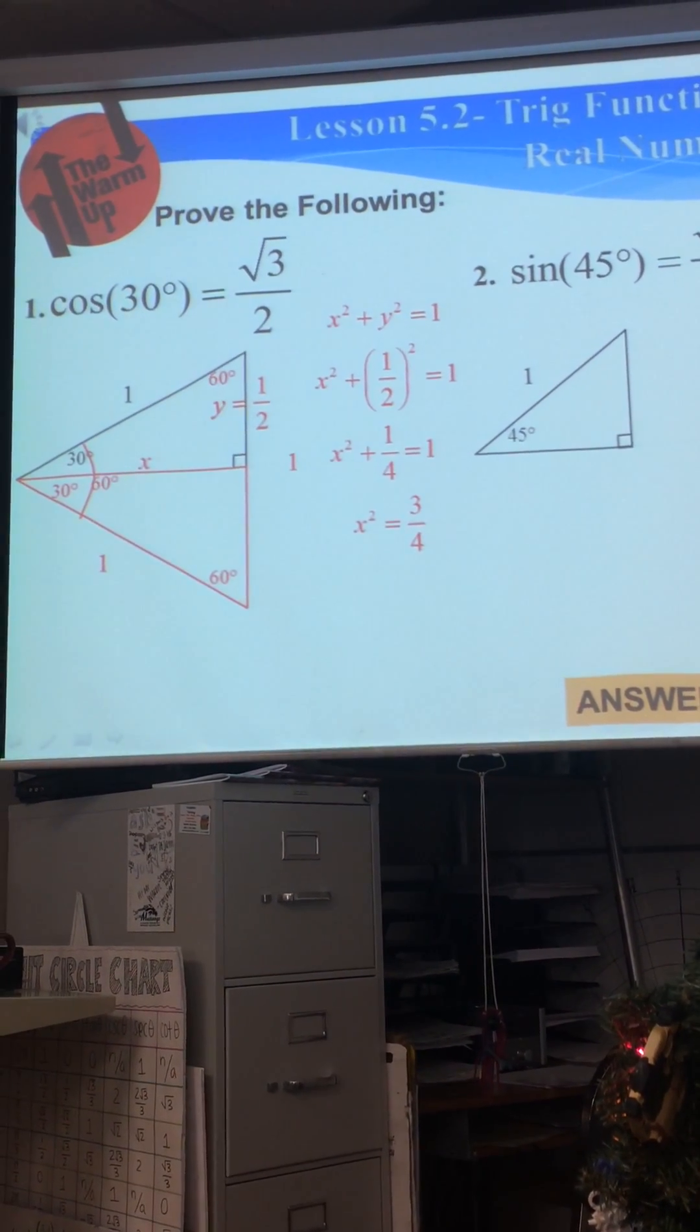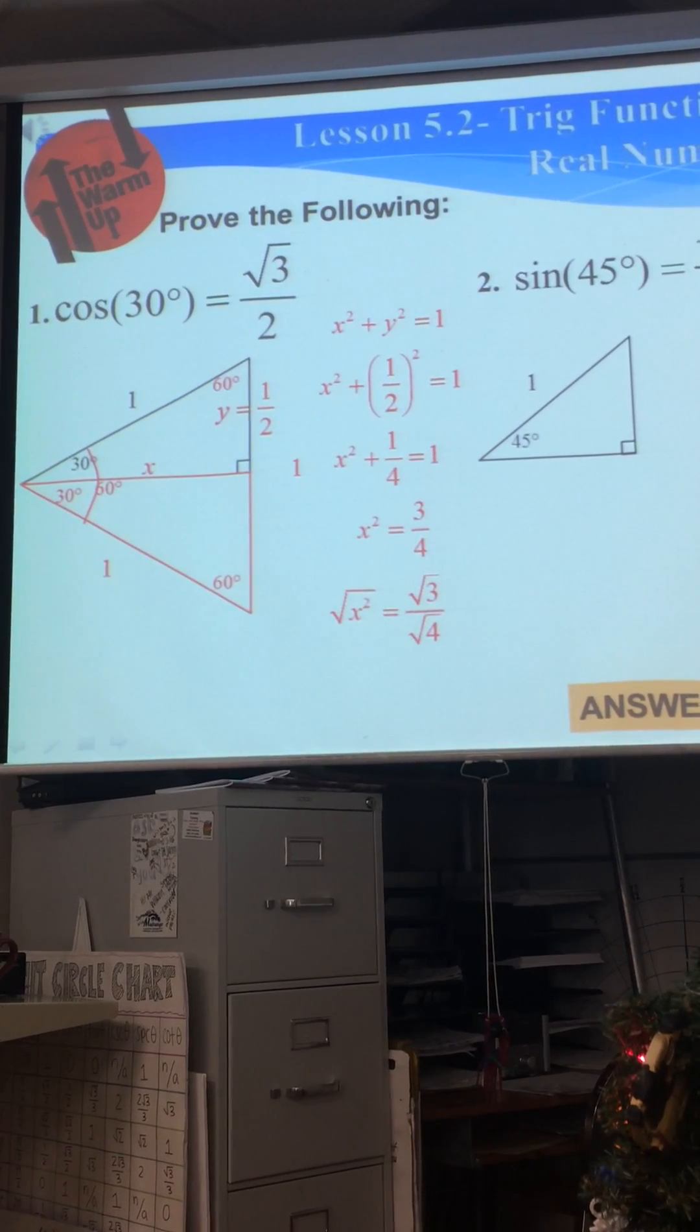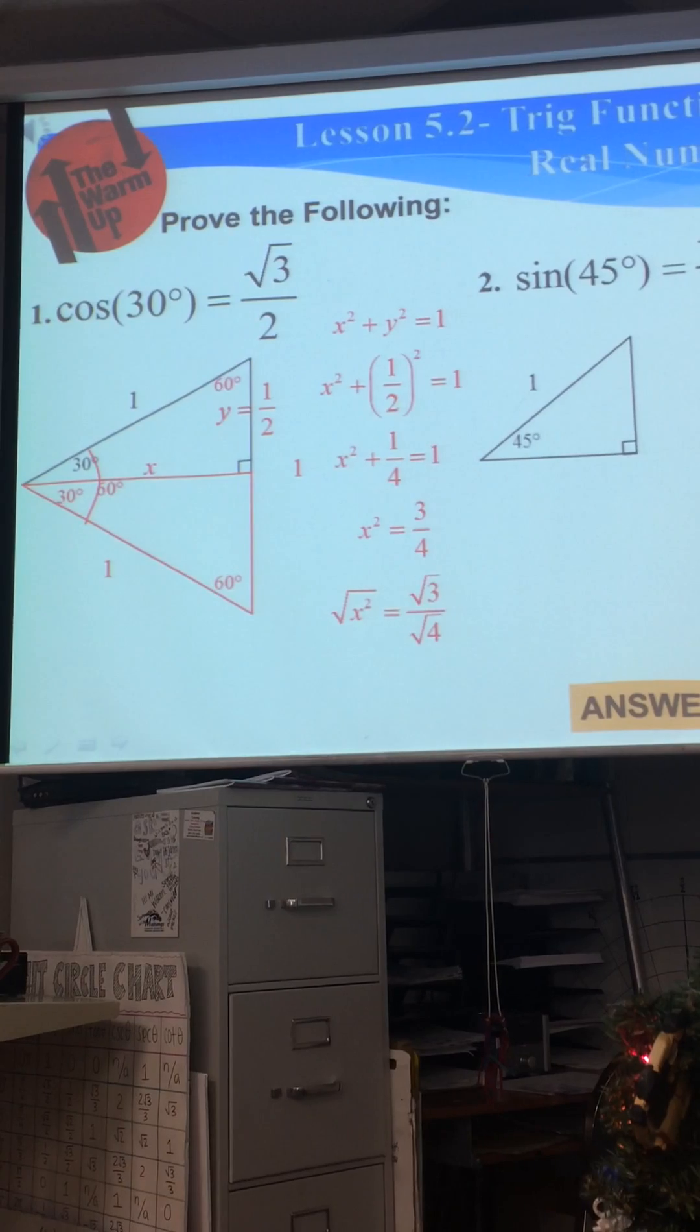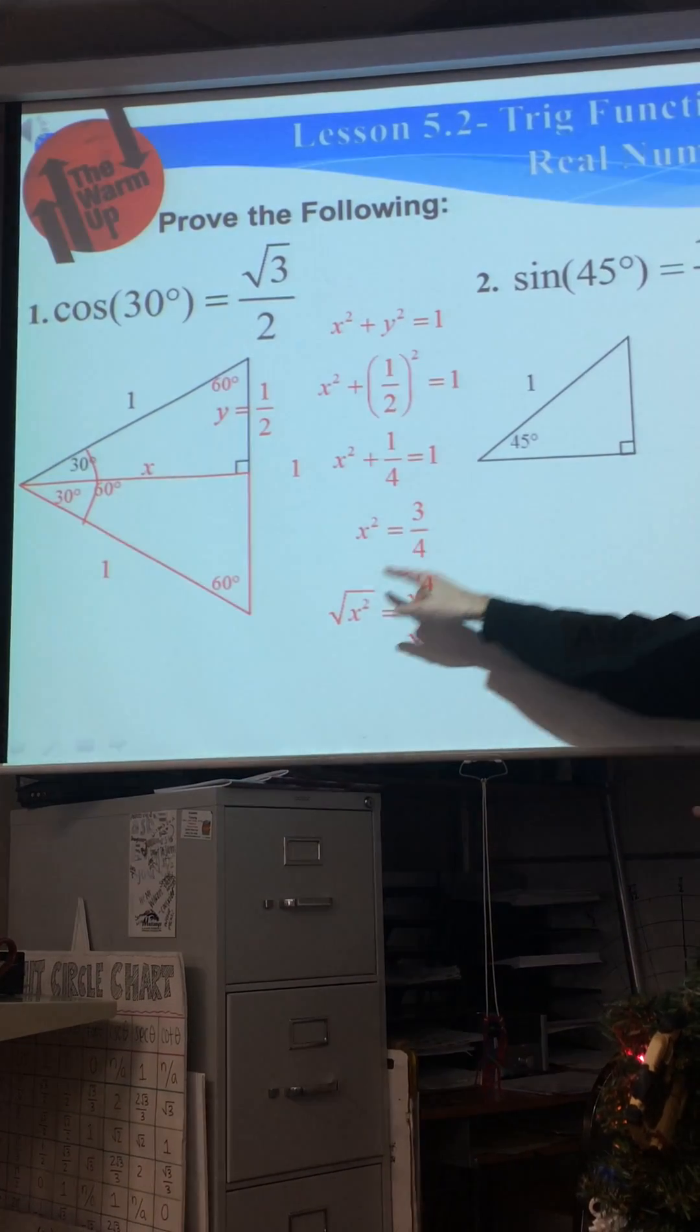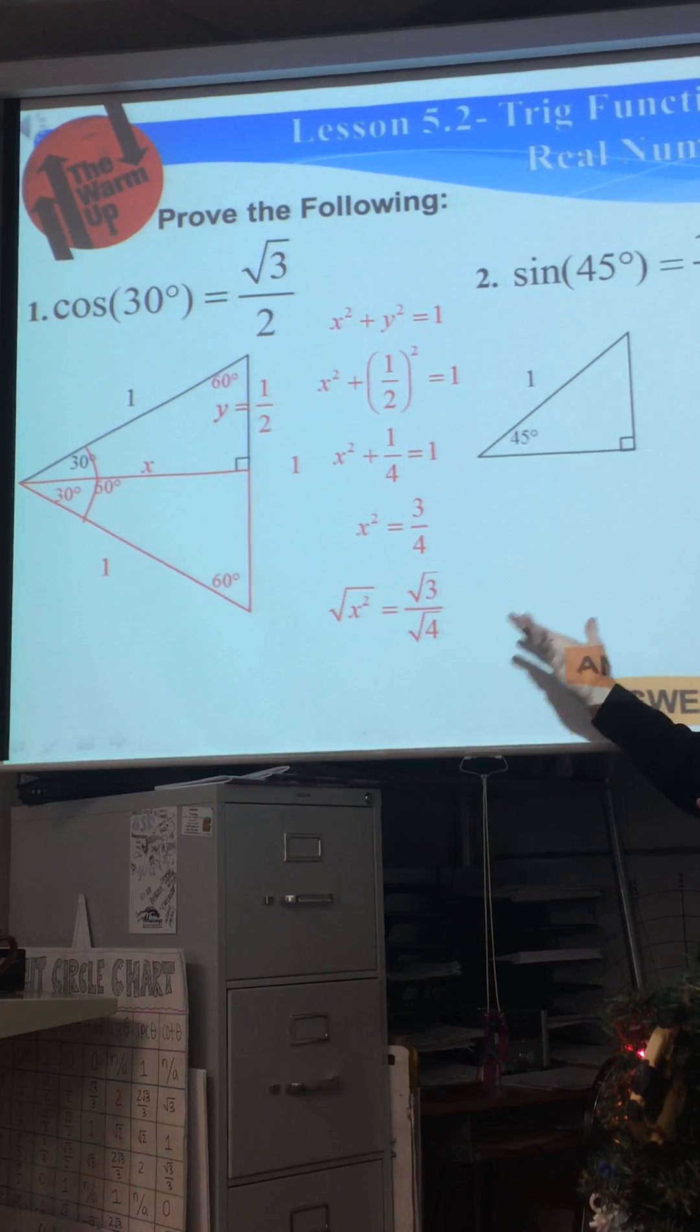So we have x² equals 3/4. How do I undo the square? Take the square root. We're going to take the square root of the top and the bottom. Now whenever you take the square root of an x variable, we have to put plus or minus, but why didn't I put that there? Am I getting lazy?